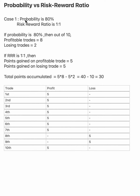In case one, the probability is 80 percent, meaning out of 10 trades, 8 would be profitable and 2 would be losing trades. The risk reward ratio is 1 is to 1, meaning we will have equal points for profitable and losing trades — 5 points each. So the total points accumulated would be 5 into 8 for profitable minus 5 into 2 for the loss.